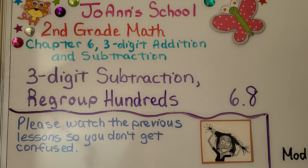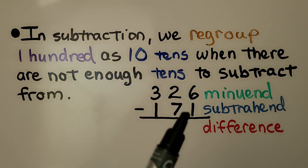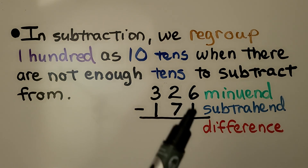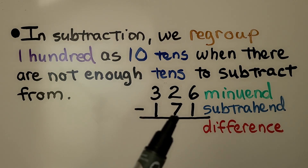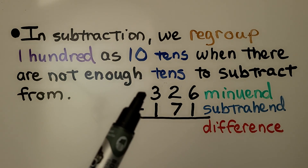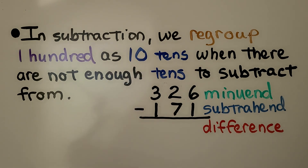Lesson 6.8: three-digit subtraction. We regroup hundreds in subtraction — we regroup 100 as 10 tens when there aren't enough tens to subtract from. Here we have six ones and we want to take one away; we have enough. But here we have two tens and we want to take away seven tens; we don't have enough, so we would need to regroup and change 100 into ten tens. Remember: this is the minuend, this is the subtrahend, and the answer is the difference.